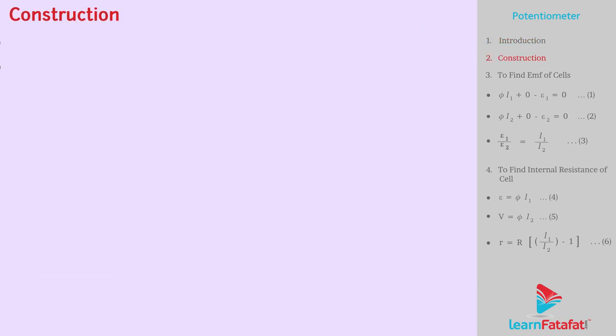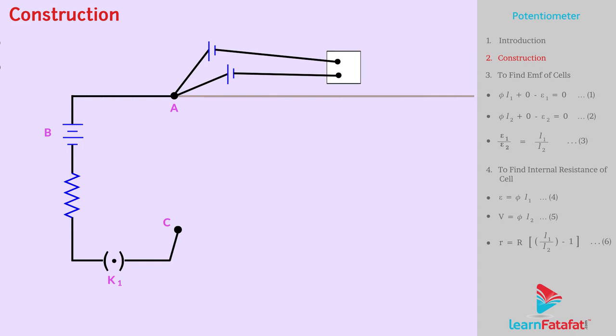Construction. It consists of a long piece of wire with uniform cross-sectional area which is connected to a standard cell. Generally, in an experimental setup, the long wire is cut in pieces and placed side by side and then is connected with a vertical metal strip.